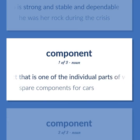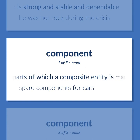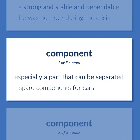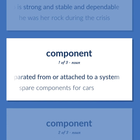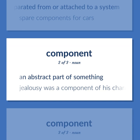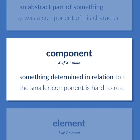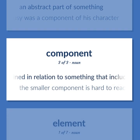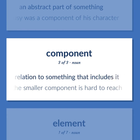An artifact that is one of the individual parts of which a composite entity is made up, especially a part that can be separated from or attached to a system — spare components for cars. An abstract part of something — jealousy was a component of his character. Something determined in relation to something that includes it — the smaller component is hard to reach.